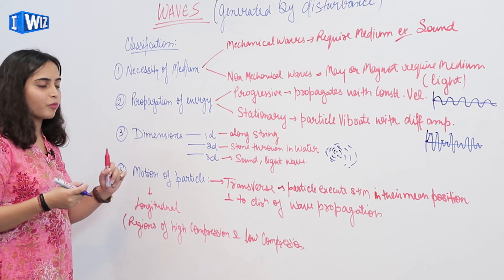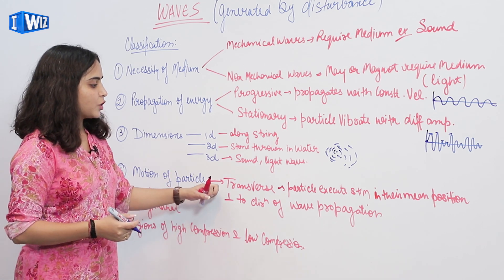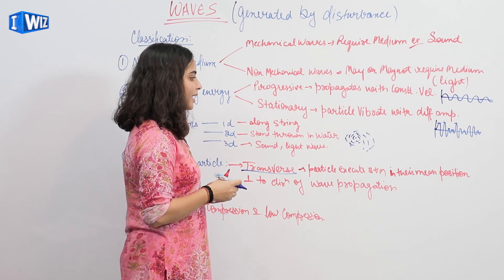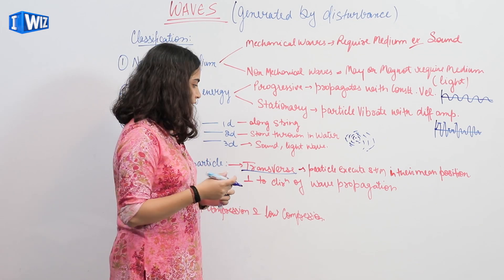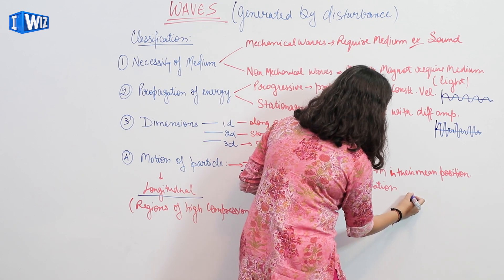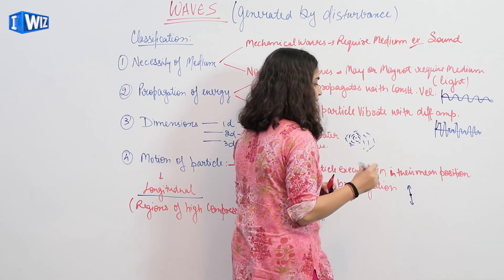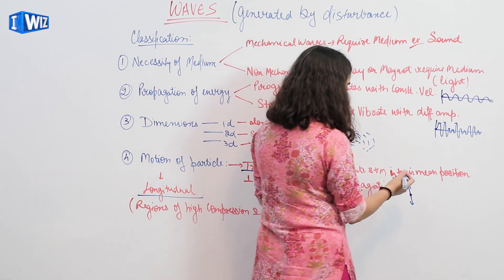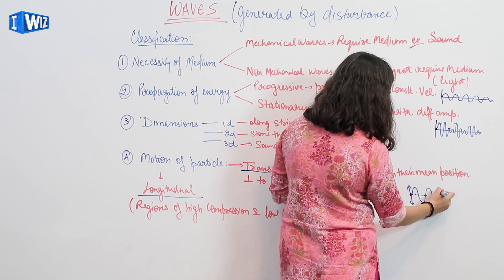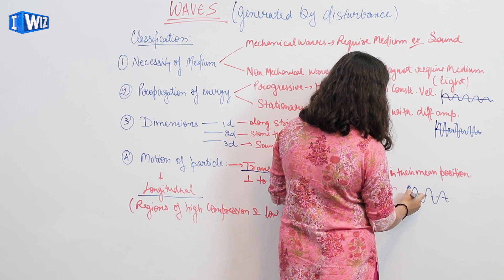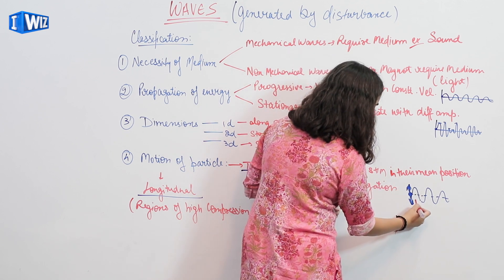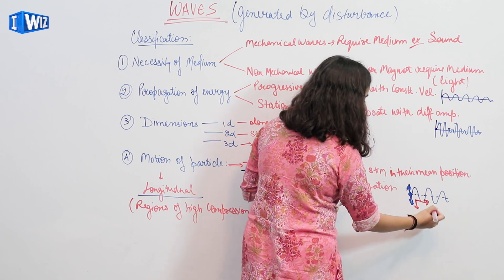Next, we classify waves on the basis of motion of particle — transverse and longitudinal. In transverse waves, particles execute SHM about their mean position, which is perpendicular to the direction of wave propagation. The particle oscillates through its mean position perpendicular to the direction the wave is travelling.